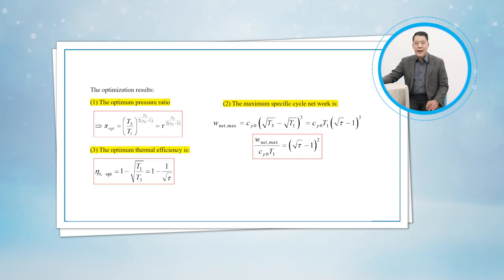The last is the optimum thermal efficiency, and it is. It is also found only depending on the temperature ratio.